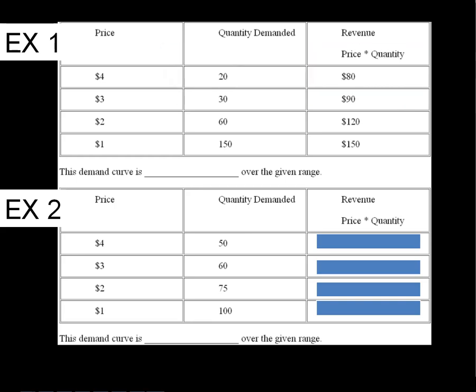So as we raise the price, we're making less revenue. And so that means that this is an elastic demand curve, or vice versa. As I lower my price, I make more revenue. So this is a firm facing an elastic demand.